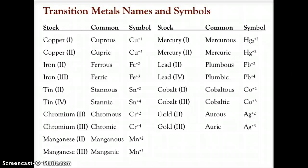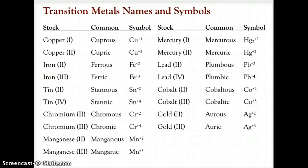Here we have copper, and copper can come in a positive-one charge or a positive-two charge. There are two ways of naming. There's the Stock naming system, where you use a Roman numeral to signify the charge — so copper(I) has the Cu⁺¹ symbol, and copper(II) has the Cu⁺² symbol. The common name is cuprous for the plus-one ion and cupric for the plus-two ion. The ion with the lesser charge always ends in -OUS, and the ion with the higher charge always ends in -IC.